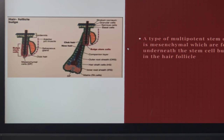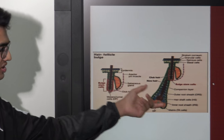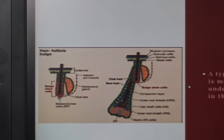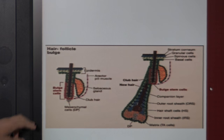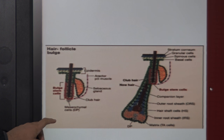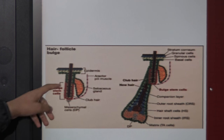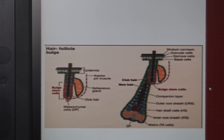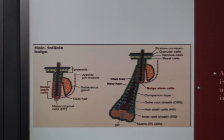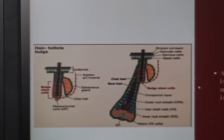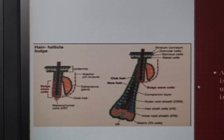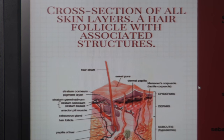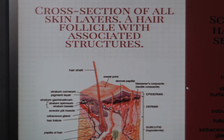Here we have an example of the hair follicle bulge, a single unit that gives rise to different integral parts of the pilosebaceous unit. The mesenchymal cells underneath the hairs, along with the bulge stem cells, are responsible for the generation of hair itself. Adjacent to this are the sebaceous glands, responsible for secreting a liquid called sebum, which lubricates the skin. There are two types: ones connected to the hair follicle, and pure sebaceous units situated differently.